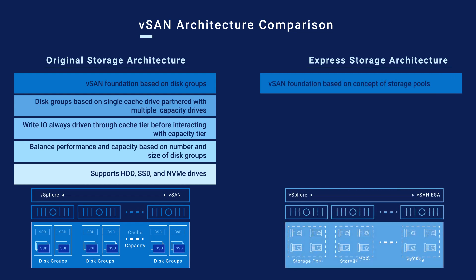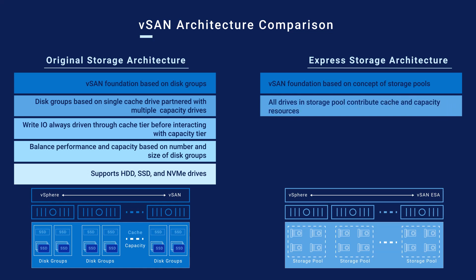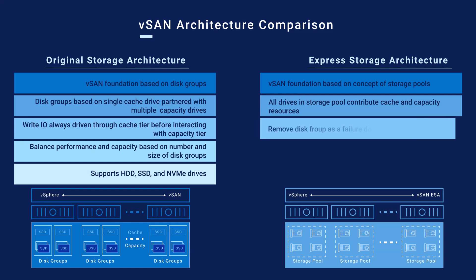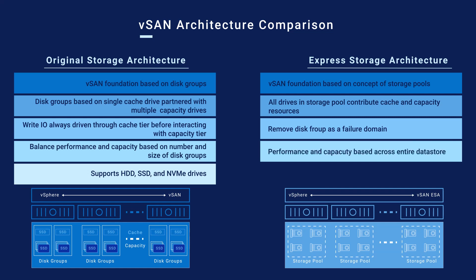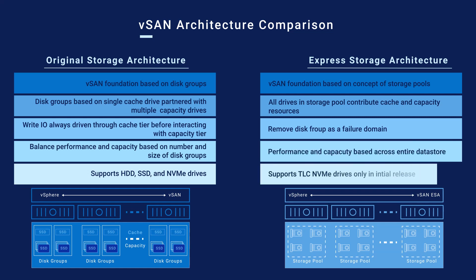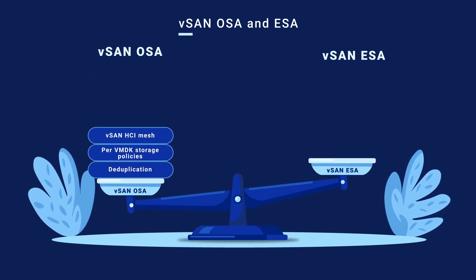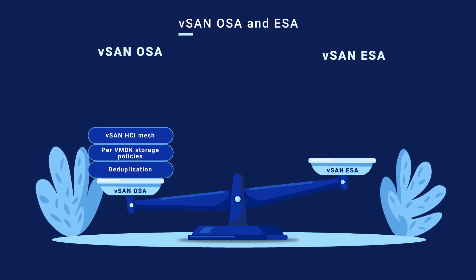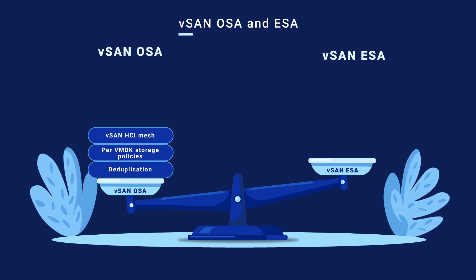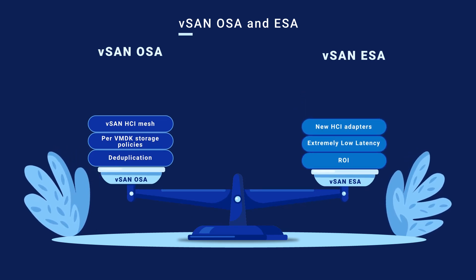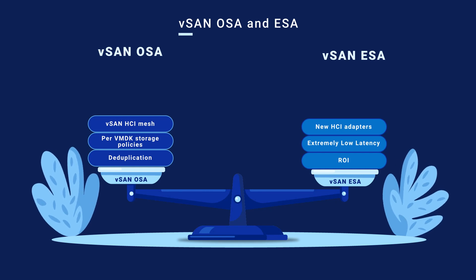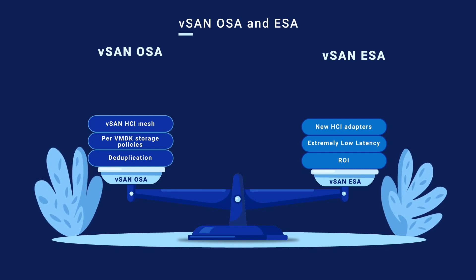With ESA, this vSAN foundation replaces disk groups with storage pools. A major way storage pools differ from disk groups is that with ESA, all disks are kept together and contribute to cache and capacity jointly. Note that at least initially, only TLC NVMe drives are supported for use with ESA. For example, if you have a stretched cluster or even a two-node cluster and want to share storage using vSAN HCI mesh, then vSAN OSA would be required. If you want the fastest performance with the lowest latency, then vSAN ESA is the better option. Both architectures offer various benefits and VxRail will help you maximize the potential of either deployment.